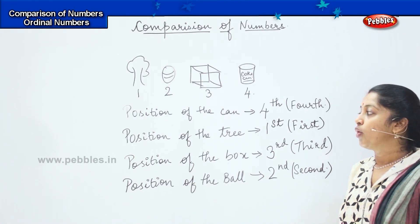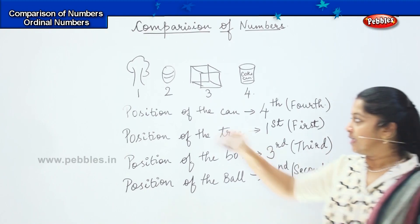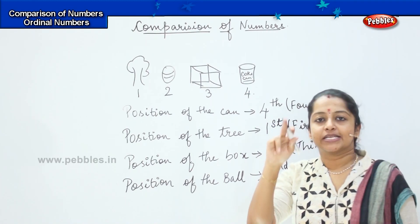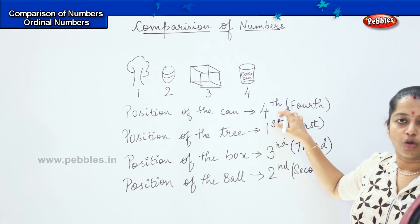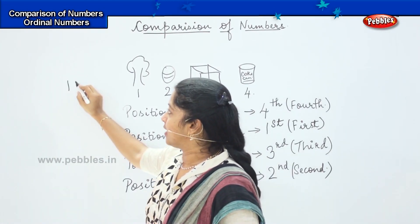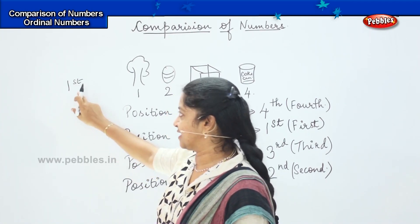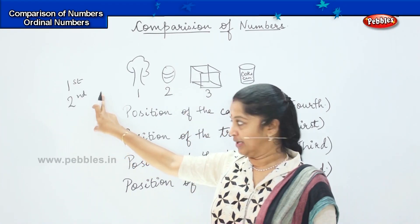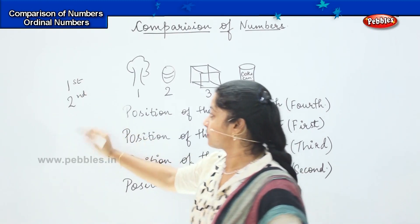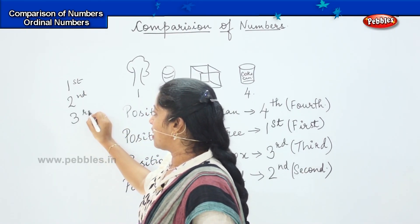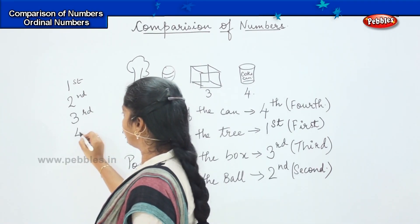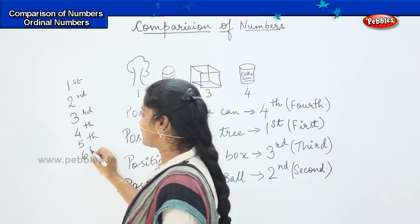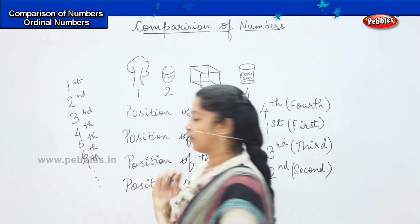Children, one thing to keep in mind: for one, two, and three we use different suffixes, and from fourth onwards we write 'th' beside the digit. For first, we write 1st — we don't say 'one,' we say 'first.' For two, we write 'nd' on top — second. For three, we write 3rd — r, d — third. And from fourth onwards, we write 'th': fourth, fifth, sixth, seventh, and so on.